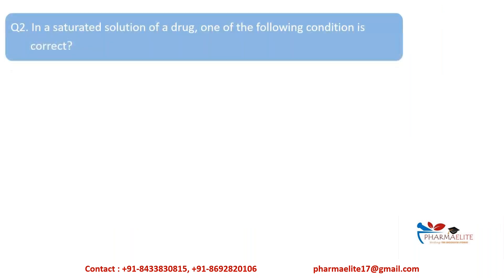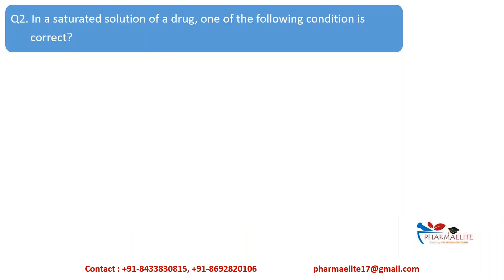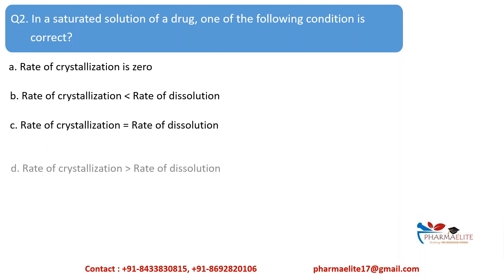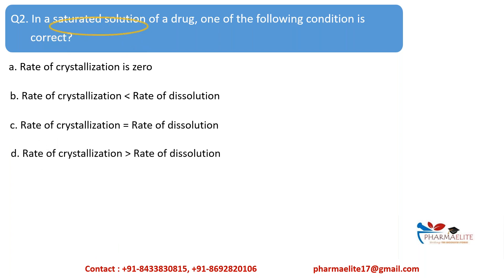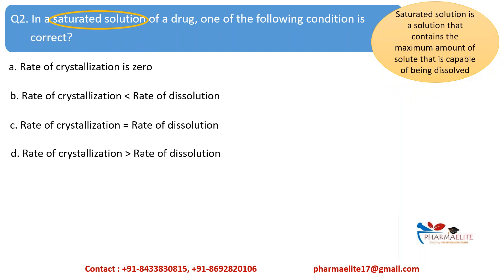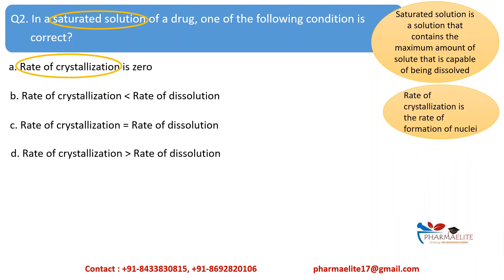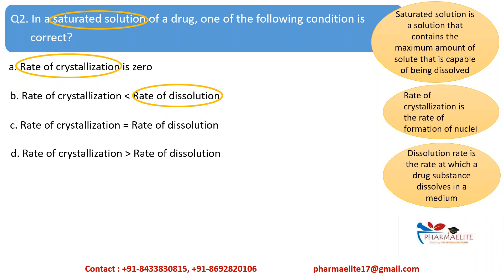Moving on to the second question: in a saturated solution of a drug, one of the following conditions is correct. For this question, let us first know some terms. A saturated solution is a solution that contains the maximum amount of solute capable of being dissolved. The rate of crystallization is the rate of formation of nuclei. The dissolution rate is the rate at which drug substance dissolves in a medium. Option A states that the rate of crystallization is zero — this is true when dissolved concentration is zero, meaning there is no solute present in the solvent.